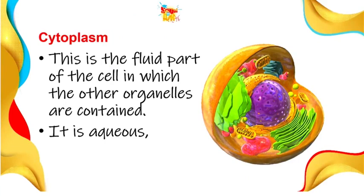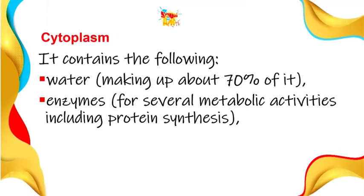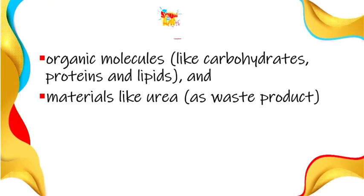Now we shall look at each cell organelle individually. The cytoplasm is the fluid part of the cell in which other organelles are contained; it is aqueous or jelly-like in structure and is like the body where you find all the components that make up the cell. The cytoplasm contains water, which makes up about 70% of it, and enzymes for several metabolic activities including protein synthesis. It also contains organic molecules like carbohydrates, proteins, and lipids, and waste materials. We shall look at protein synthesis and cell division in the next class.